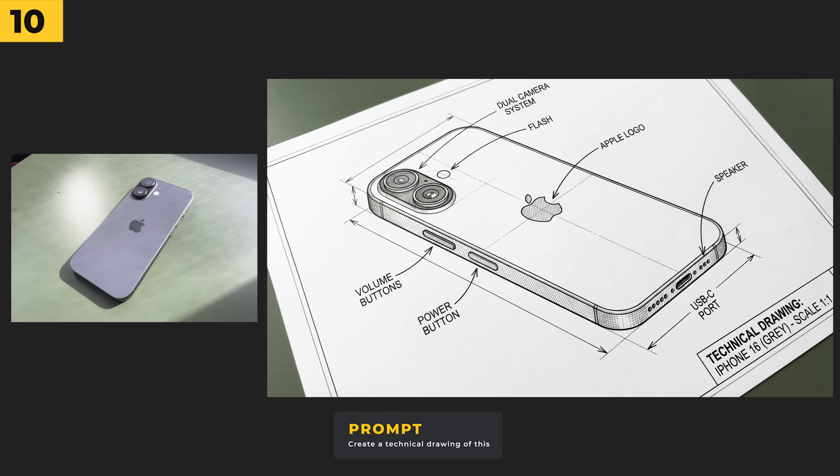Nano Banana Pro is incredible at de-aging. All I did was give it an image of myself and a simple prompt of 'make him look younger,' and I'm going to say it does actually look like me when I was a lot younger. And here's me as an old man — it's just a really natural aging effect.